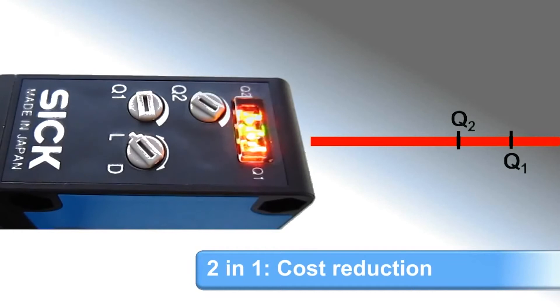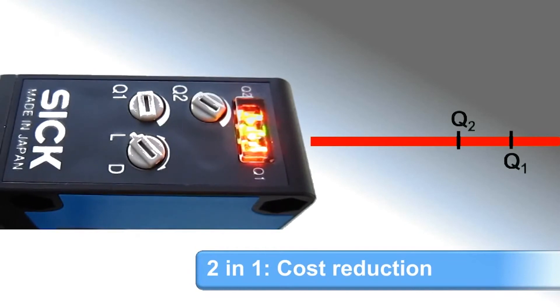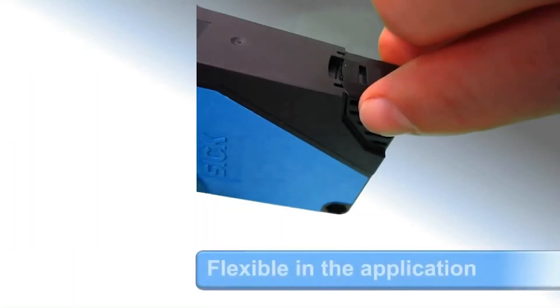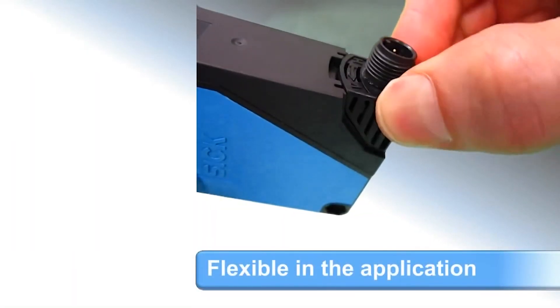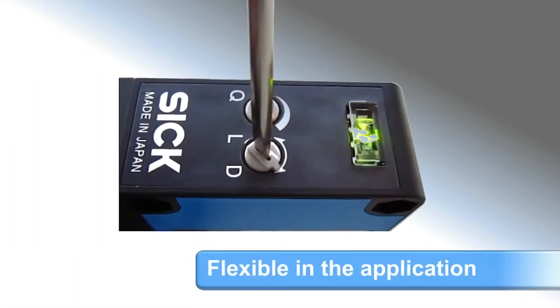We've effectively squeezed two sensors into a single W280 Long Range, reducing cost. It's flexible, thanks to an adjustable M12 connector and the light-dark selector.